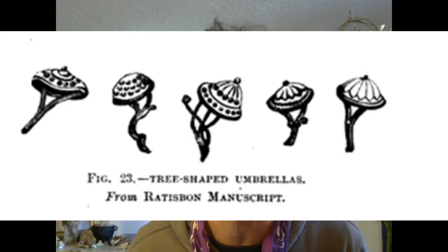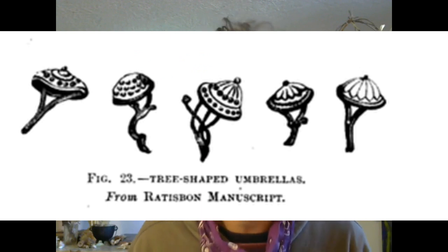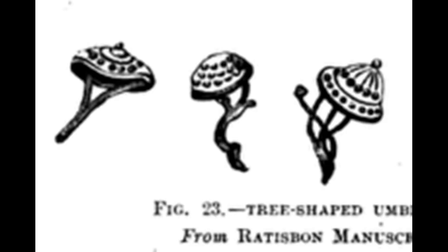Even more interesting is that these parasol trees turn up in another manuscript dating to the 1490s. I've been unable to get my hands on this manuscript, but another fellow named C.F. Gordon Cummings was able to in the late 1800s, and in his own work reproduced some of the interesting-looking trees he saw, which he dubs the 'Tree-Shaped Umbrella' — the very kind of tree a holy mushroom advocate would confuse for the Amanita muscaria mushroom.